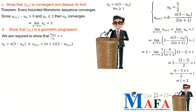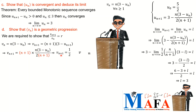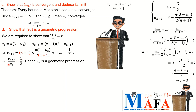So v_{n+1} equals (n+1) times (3 minus u_{n+1}), which equals (n+1) times [n(3 minus u_n) divided by 2(n+1)]. The factors of (n+1) cancel, and the remaining term n(3 minus u_n) is simply v_n. Therefore v_{n+1} equals (1/2) times v_n. Taking the ratio v_{n+1} over v_n gives 1/2, a constant, confirming that v_n is a geometric progression with common ratio 1/2.